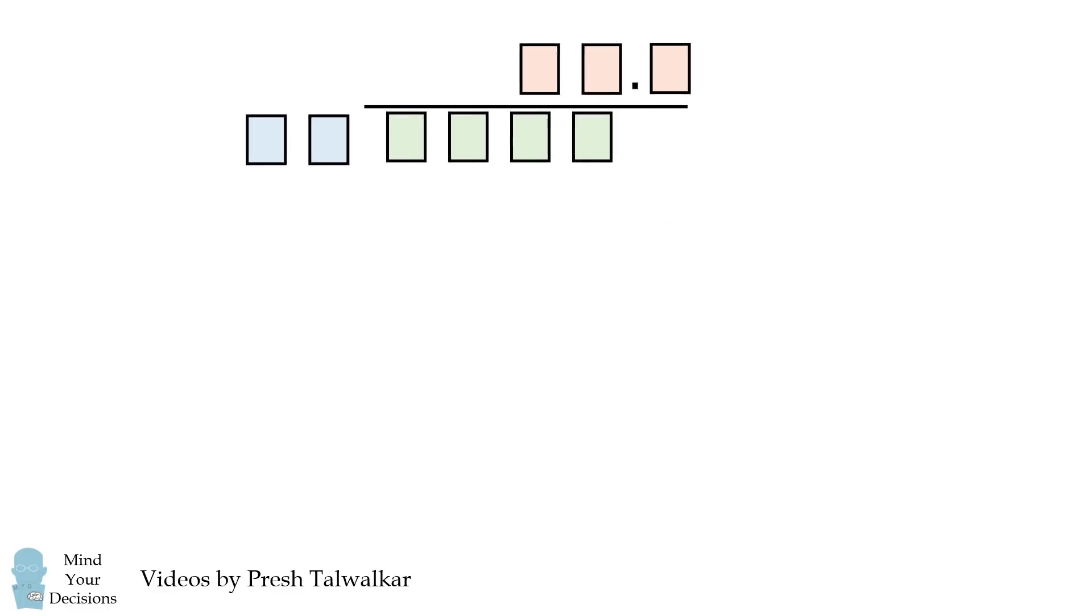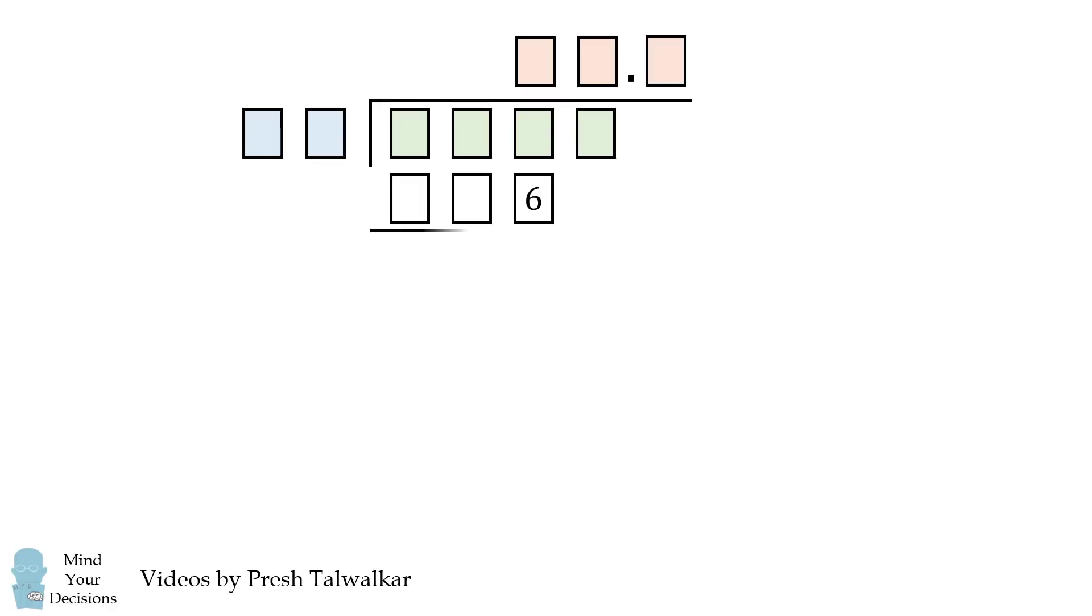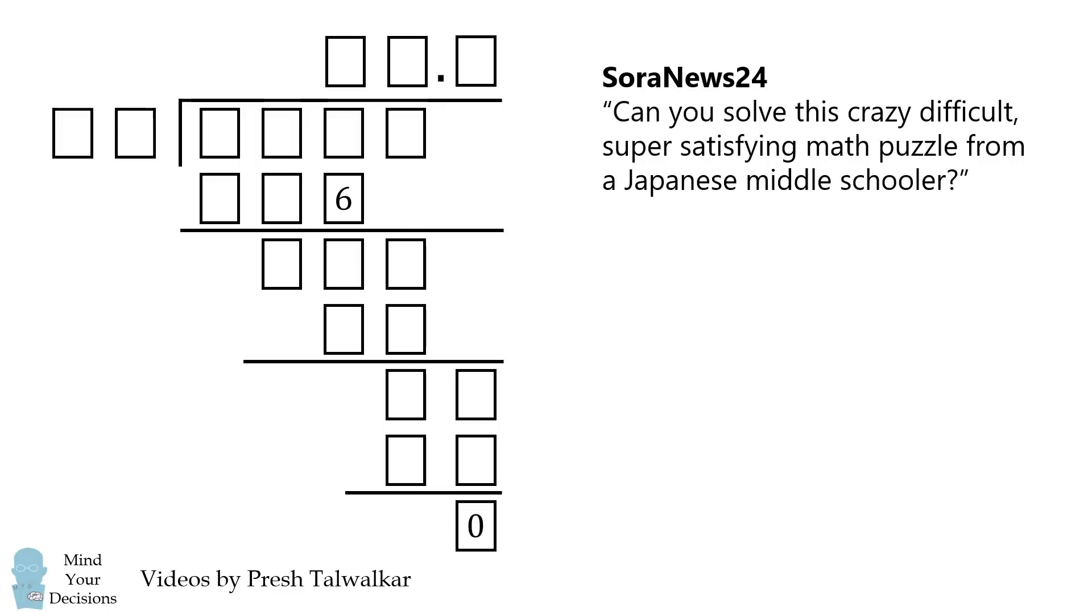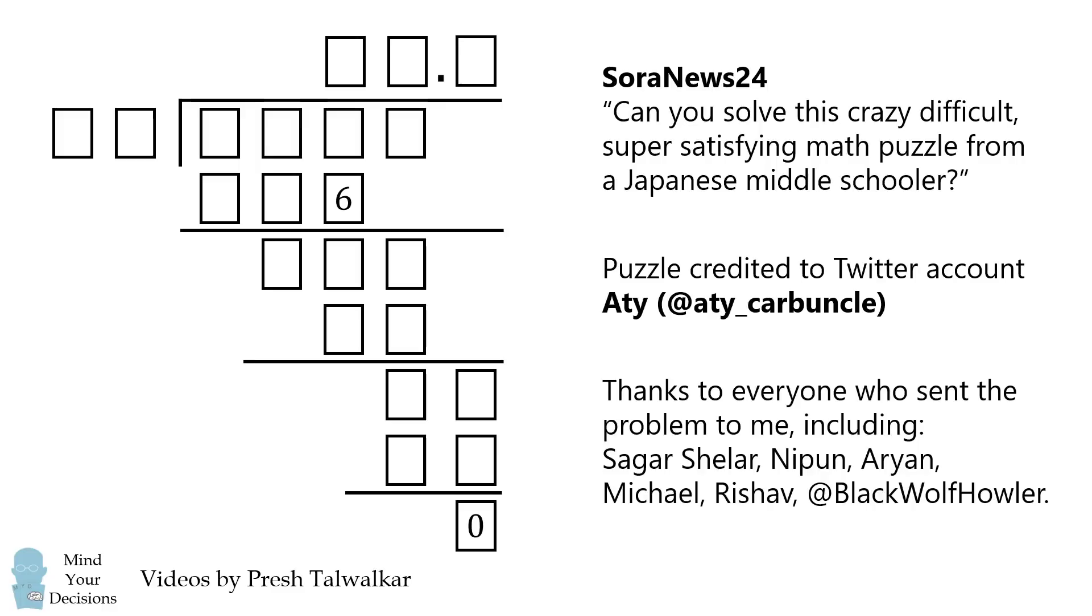Let me give a little bit more information. These are the steps of a simple long division. From this limited information, you are to solve for all of the blank spaces. It seems impossible, but it's not. The problem was reported by SoraNews24 with the headline: Can You Solve This Crazy Difficult Super Satisfying Math Puzzle from a Japanese Middle Schooler? They credit the Twitter account ati_carbuncle, and it was said to have been created by a student who's 12 or 13 years old. I thank everyone who sent me the problem, including Sagar, Shalar, Nipun, Aryan, Michael, Rishav, and BlackWolfHowler.